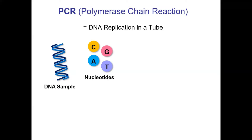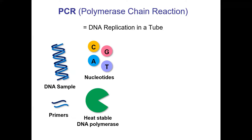We also need nucleotides — the pieces to make DNA — and primers, so we can decide which fragment of DNA we're looking for. We're not going to copy the entire genome, just a little part of it. And then, as the name implies, we need a DNA polymerase — that's right in the name. The polymerase we use is heat-stable, because we're going to use a lot of heat. In normal DNA replication we have helicase, topoisomerase, and single-stranded binding proteins, but in PCR we skip those steps and do replication in a tube.